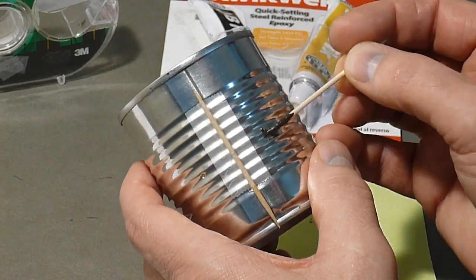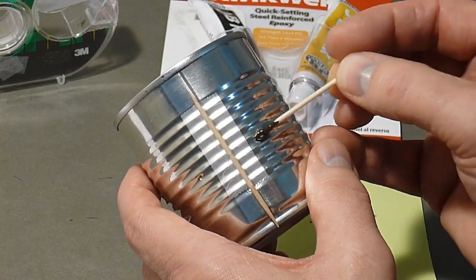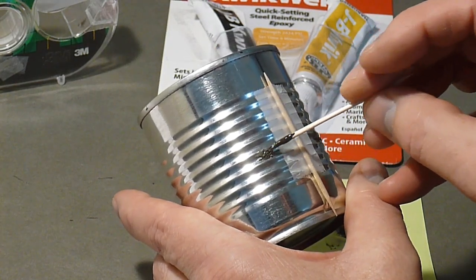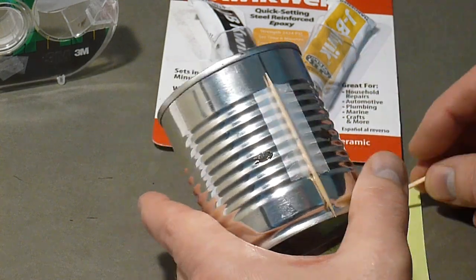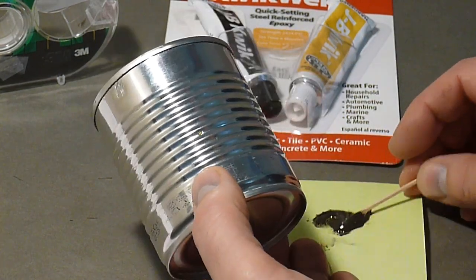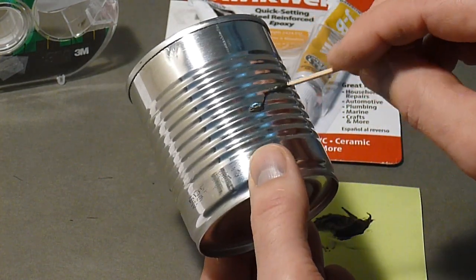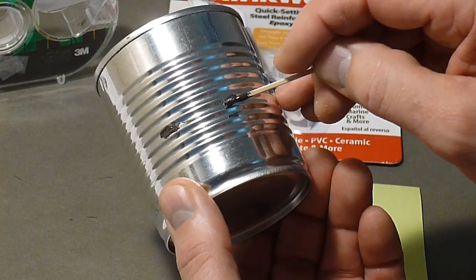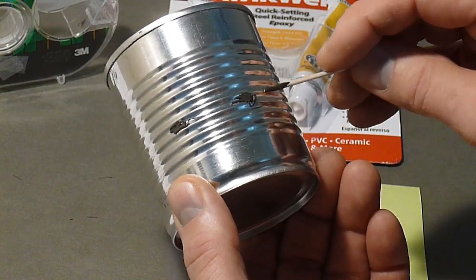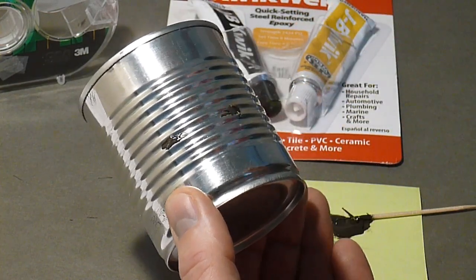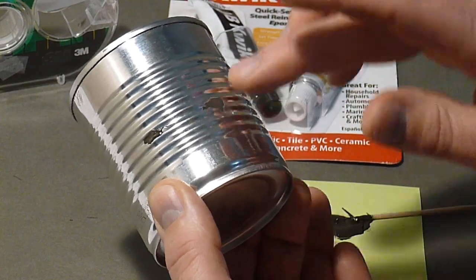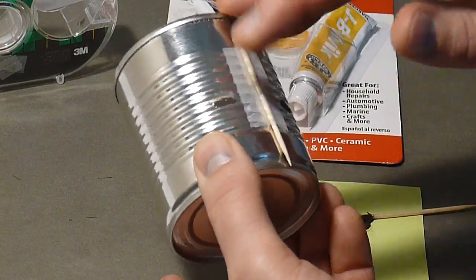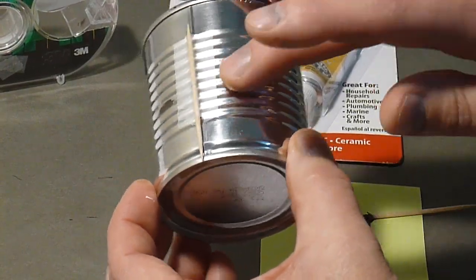Mix a couple drops of epoxy quick cement. Apply a dab to each of the four holes. Press the glue flat against the can. Let it dry.